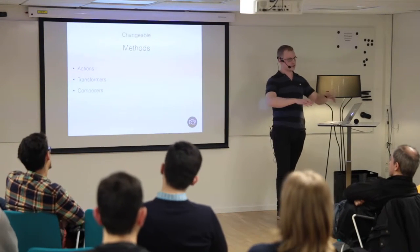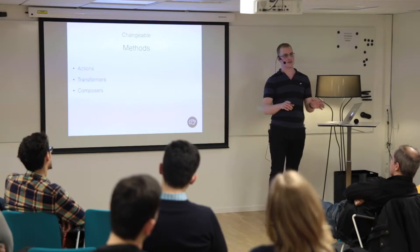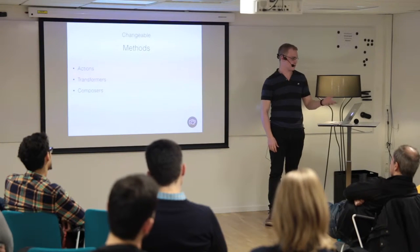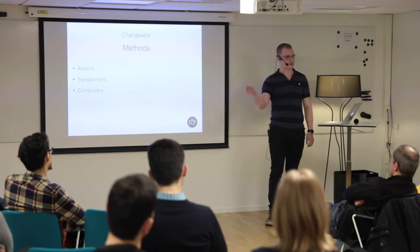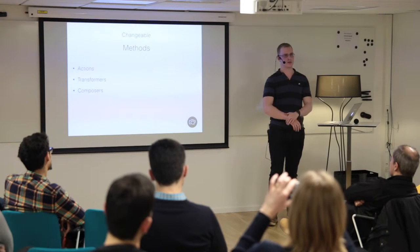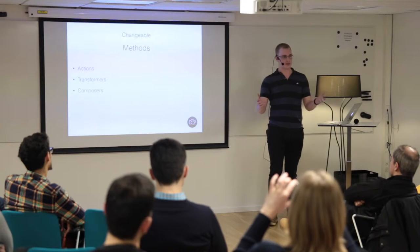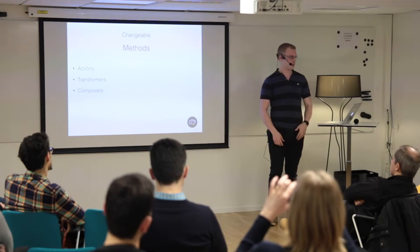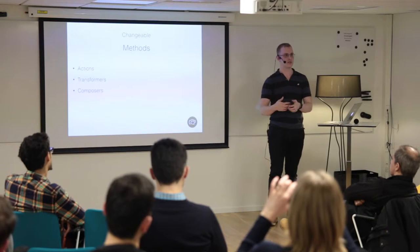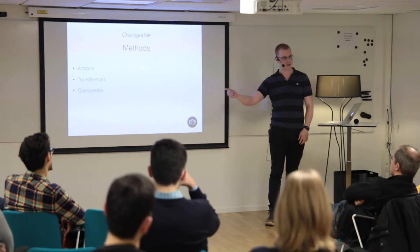So actions take in something and might return something. Then there are transformers — functions that take in some data and return a result. In Prion, for example, we have groups and groups have members. A typical transformer would take in a group, pick out the list of members, and translate that into a string that can actually be presented on screen. Those are what I'd call transformers.